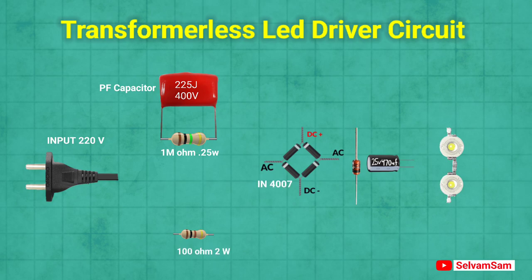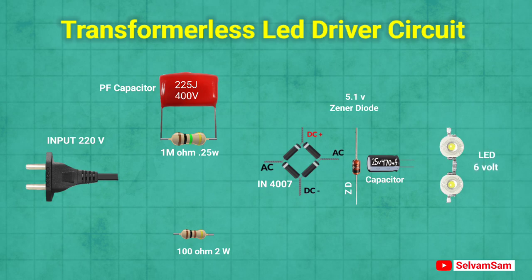Then add an IN4007 bridge rectifier, a 5.1 volt zener diode, and a 25 volt 470 microfarad capacitor. In the output, connect 3 volt LEDs. Connect the wires as I'm showing — watch till the end.